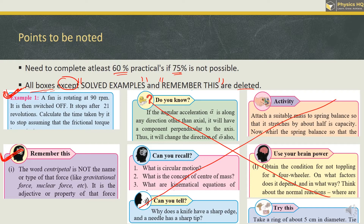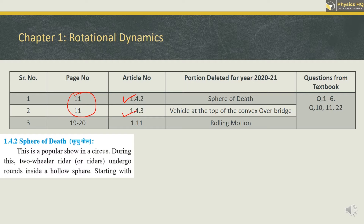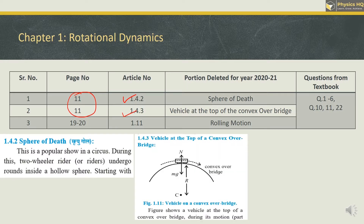Chapter 1 is Rotational Dynamics. There were two small topics in vertical circular motion that have been removed. One is the sphere of death, which is section 1.4.2, and the other is the vehicle on top of a convex bridge, section 1.4.3. These two topics have been cancelled. You will find these topics on page 11. There was a formula in 1.4.3, so you don't have to study that either.